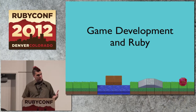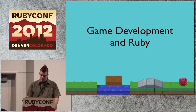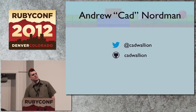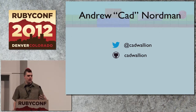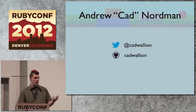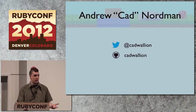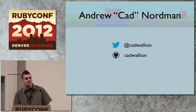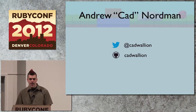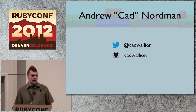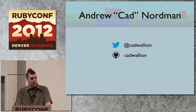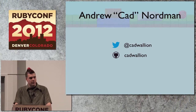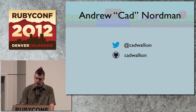Game development in Ruby is my talk. My name is Andrew Nordman, but unless you either birthed me, married me, or I owe you substantial amounts of money, you probably know me as Cad or Cadwallian. I talk on Twitter about code, beer, and my kid at Cadwallian, and I ship a lot of code and try to release just about everything we make at Agora Games under the Agora Games repository.